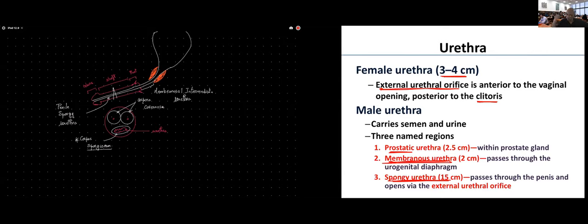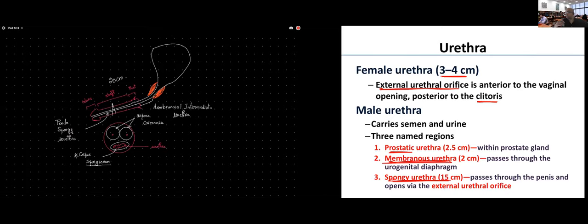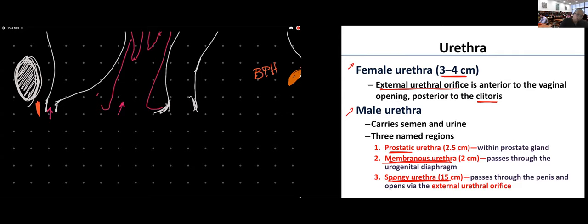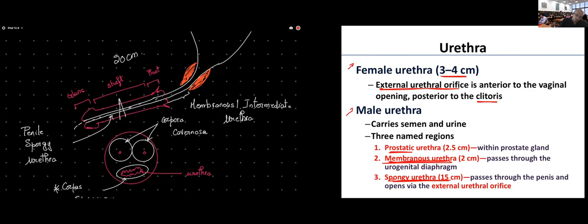For the male urethra, it's about 20 centimeters in length. This is why females are more likely to develop urinary tract infections (UTIs) — because in females the urethra is very short, making it easier for bacteria to travel up and cause infection, compared to the 20 centimeters bacteria would need to travel in males.